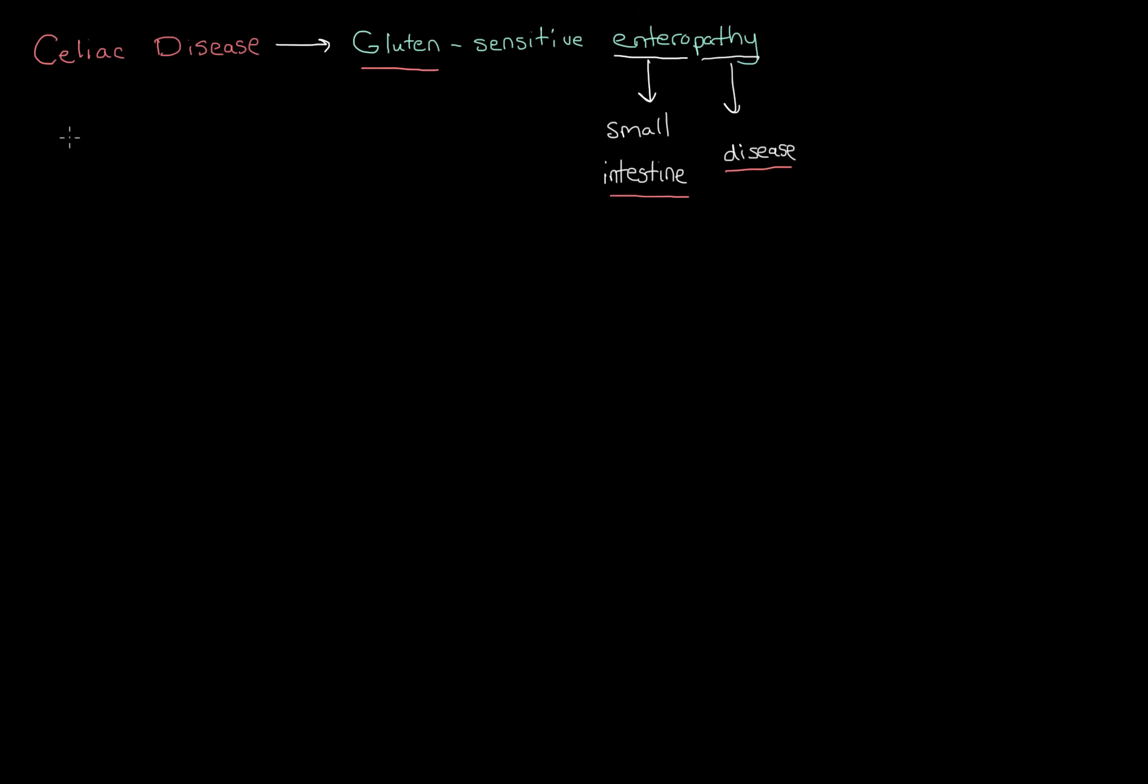It's also important to note that celiac disease is an autoimmune disease. That is, the immune system is attacking the small intestine. We don't actually know why that's happening, but we do know that some people have a genetic predisposition towards developing the disease. People who have celiac disease are more likely to develop other autoimmune diseases as well, such as type 1 diabetes or thyroid disease, and it's more common in people who have Down syndrome.